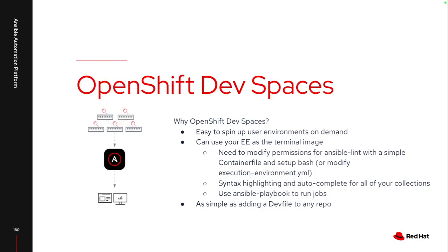There were a few steps I needed to do in order to have my execution environment work with OpenShift Dev Spaces — to make sure Ansible Lint had the correct permissions and to have Bash set up properly with the colorization I like. Once that's done, I push it into a repository. I can just add a devfile to any repository in my GitHub and quickly spin things up. I'll walk through the modifications I had to make to my execution environment and then show how simple that devfile can be.